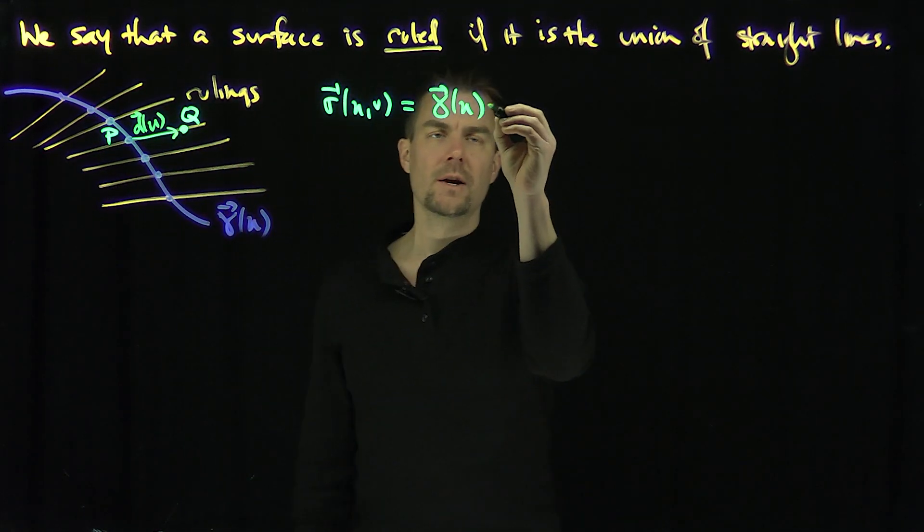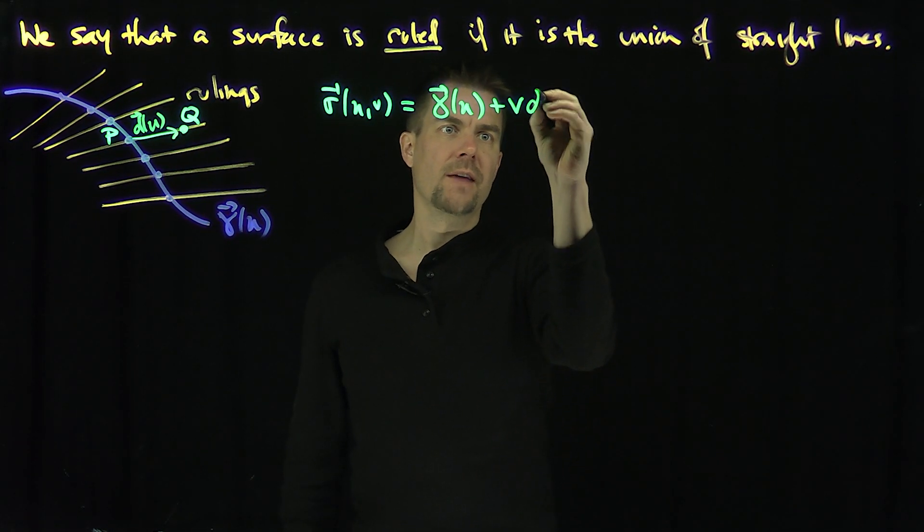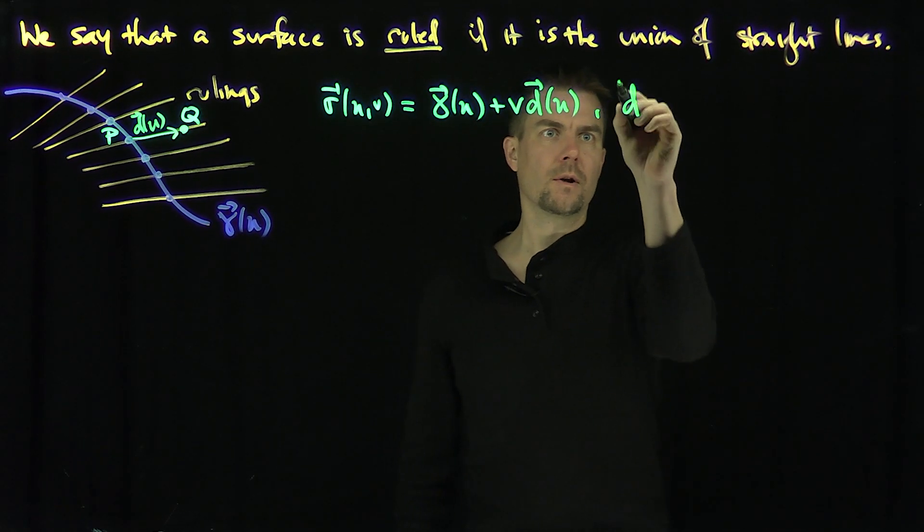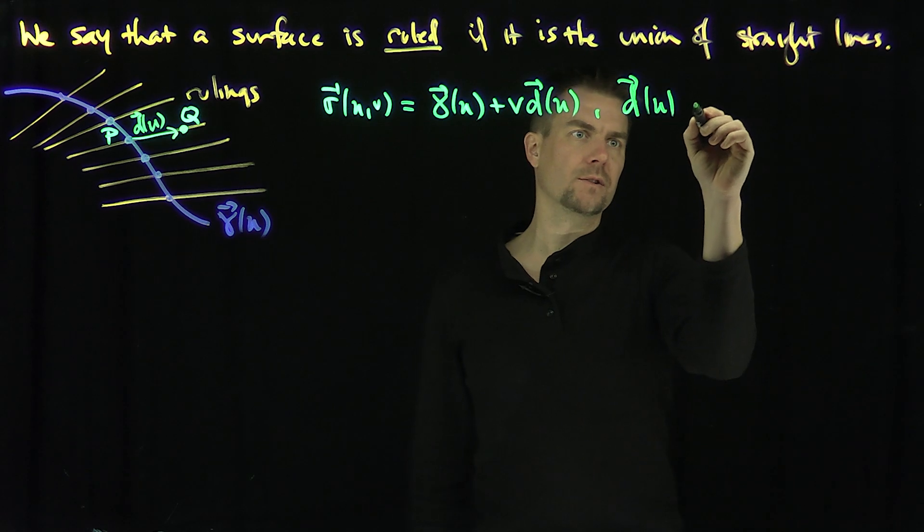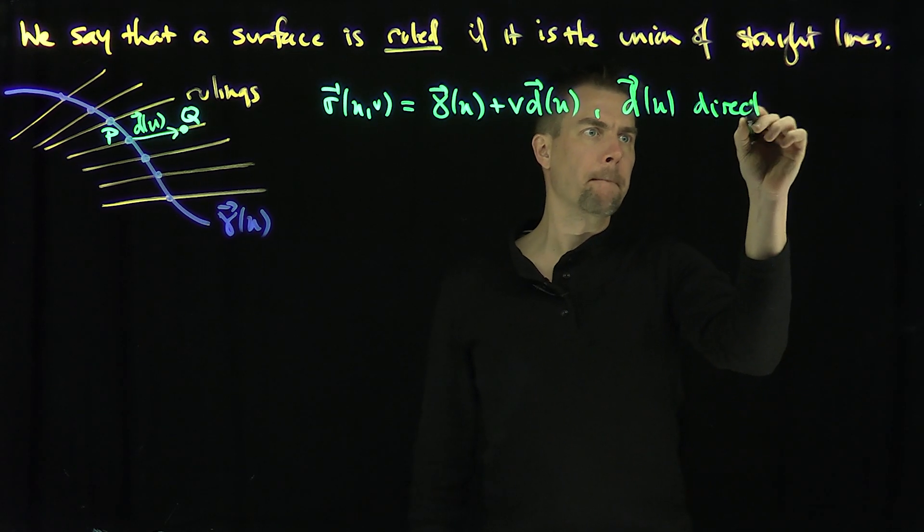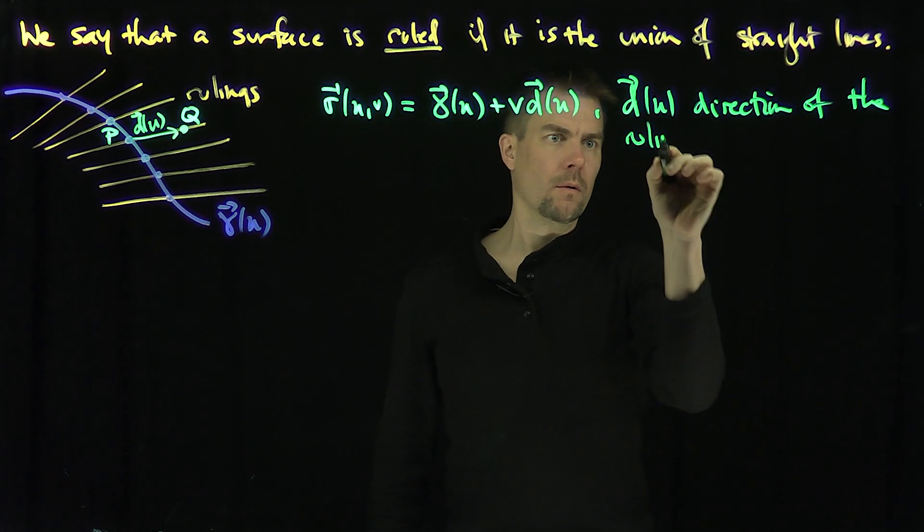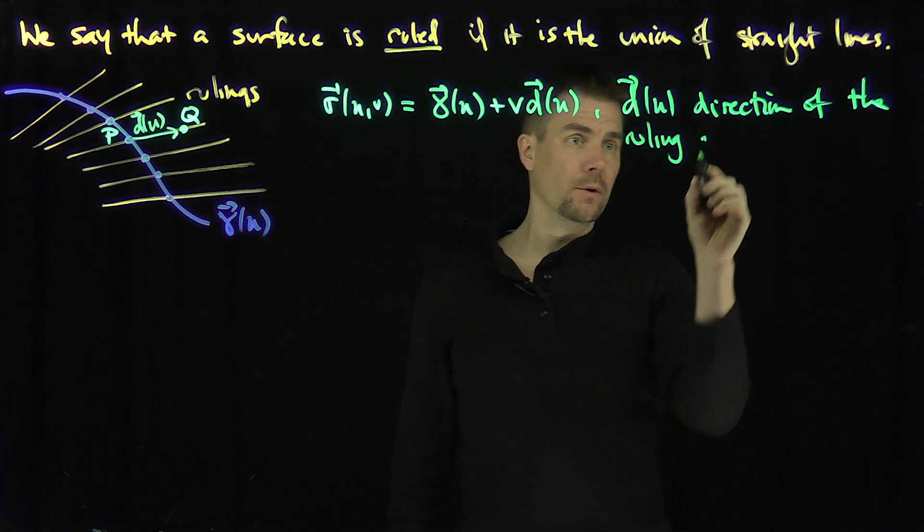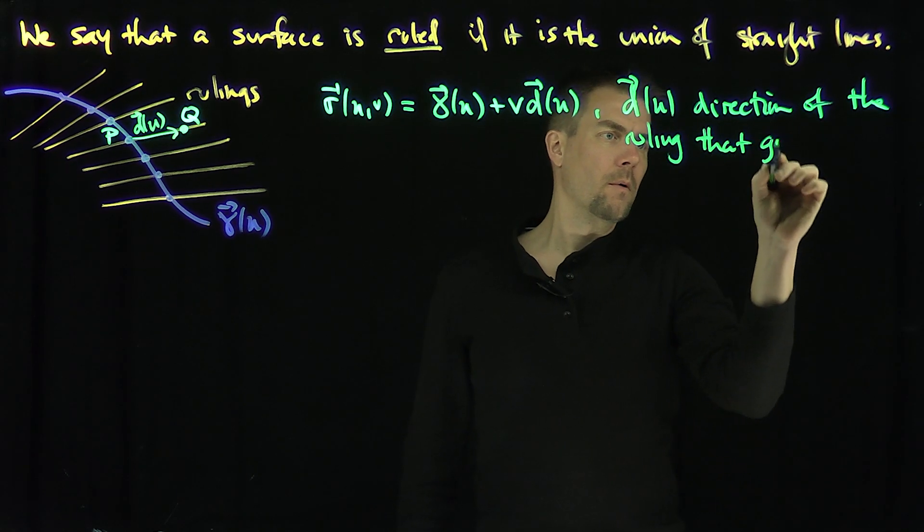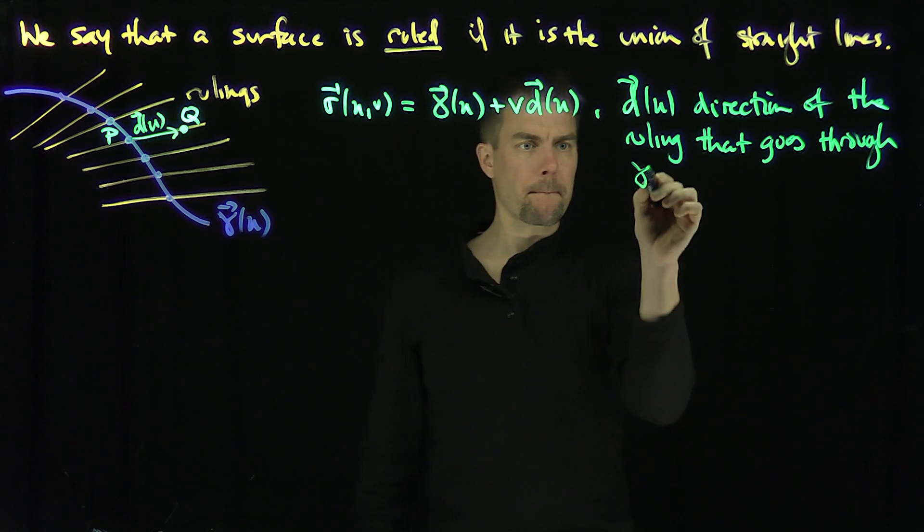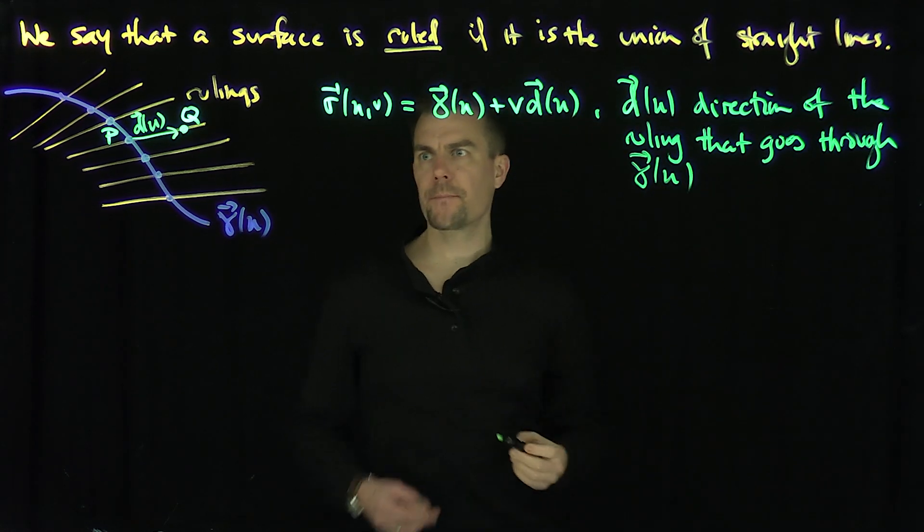You can use the direction of the line. So I move by v units in the direction of the line. Here d(u) is the direction of the line, is the direction of the ruling that goes through gamma of u.